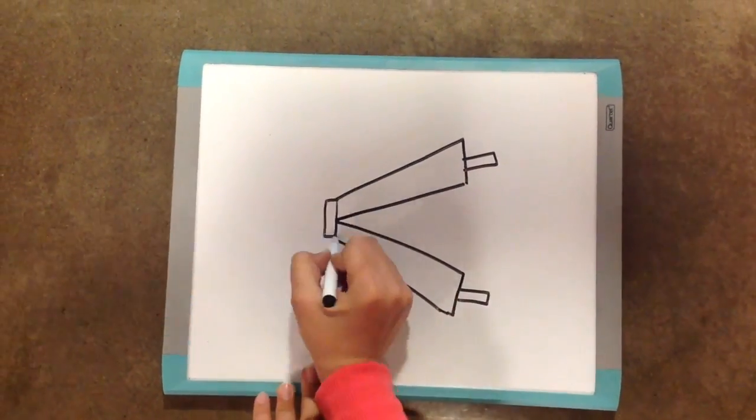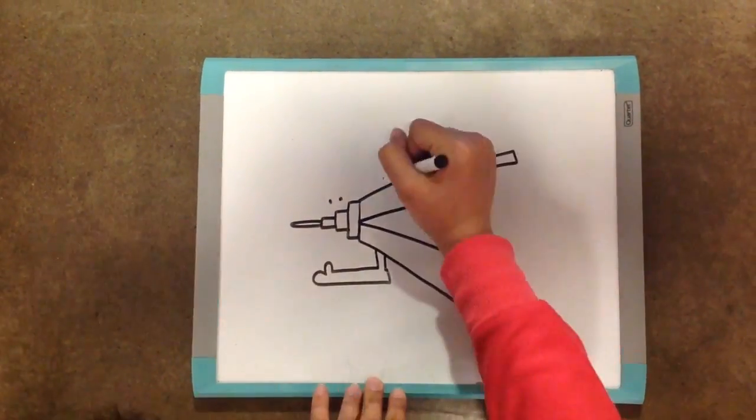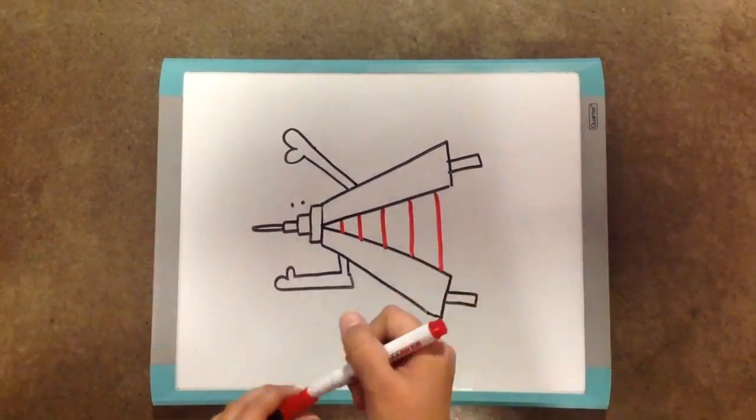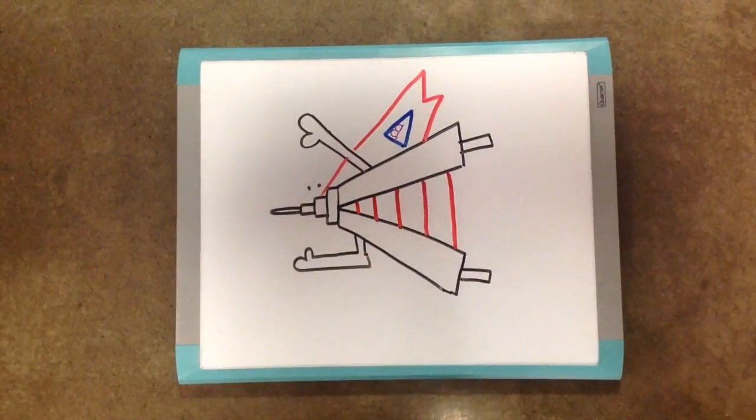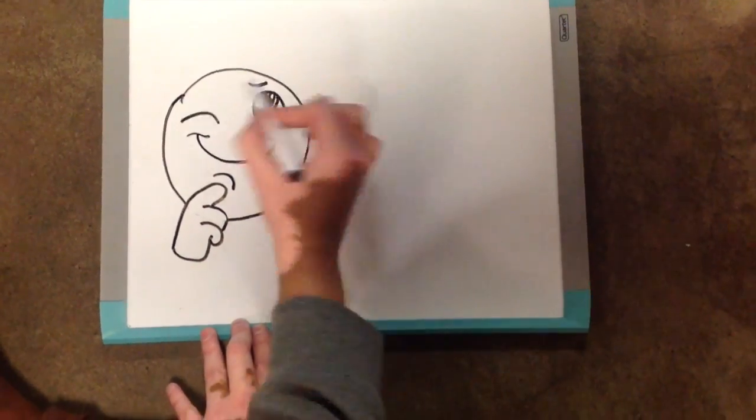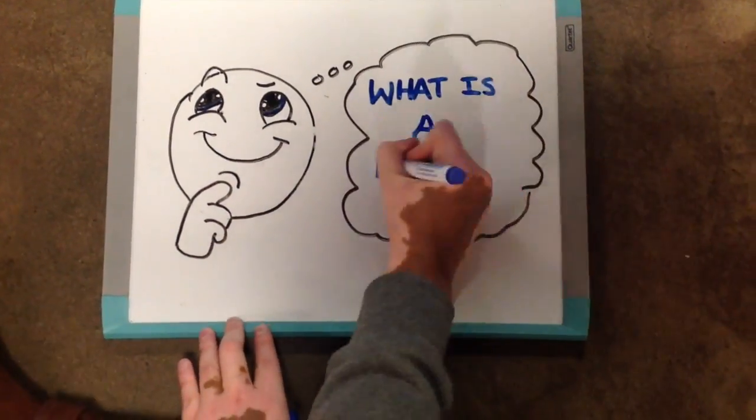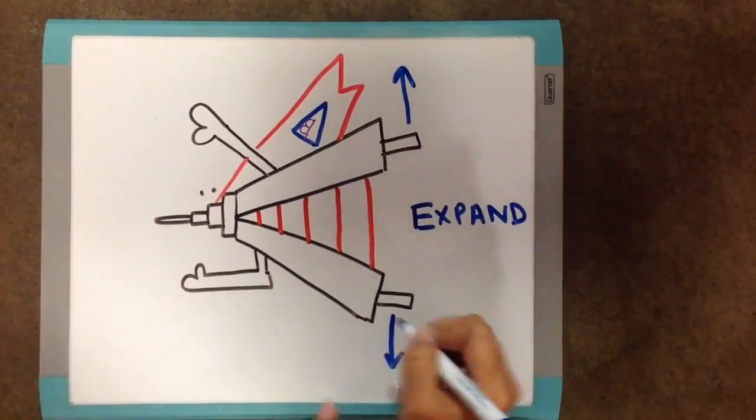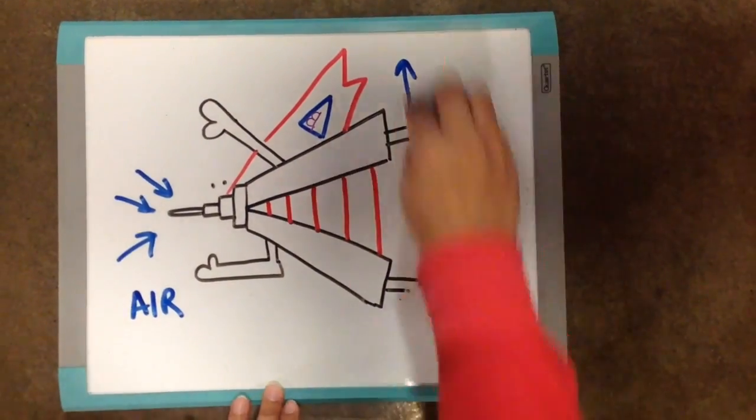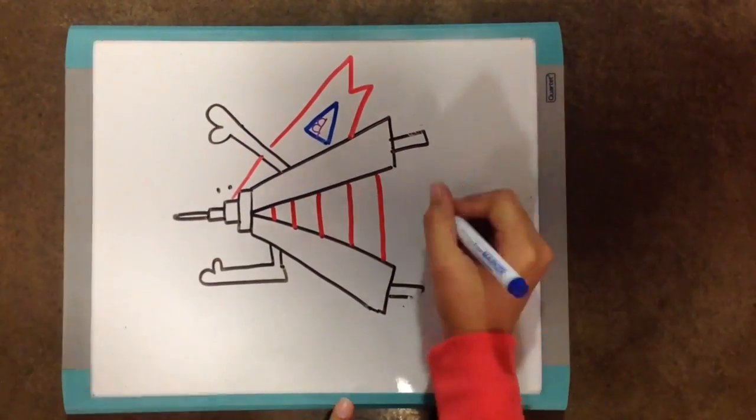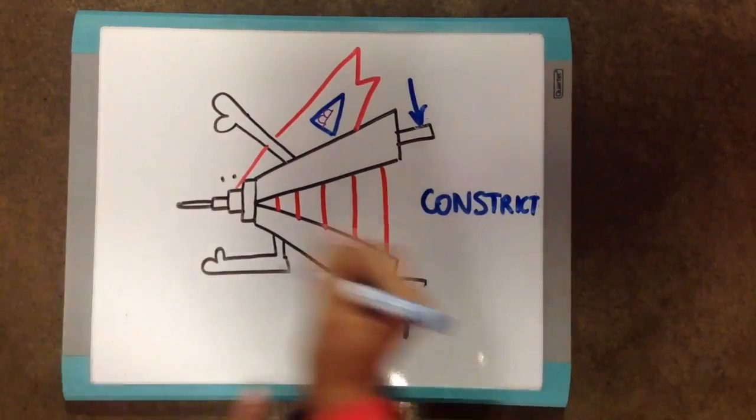Bellow system to the rescue! But what exactly is a bellow? A bellow is a tool in which, when it's expanded, it sucks in air. And when it's constricted, it pushes out air.